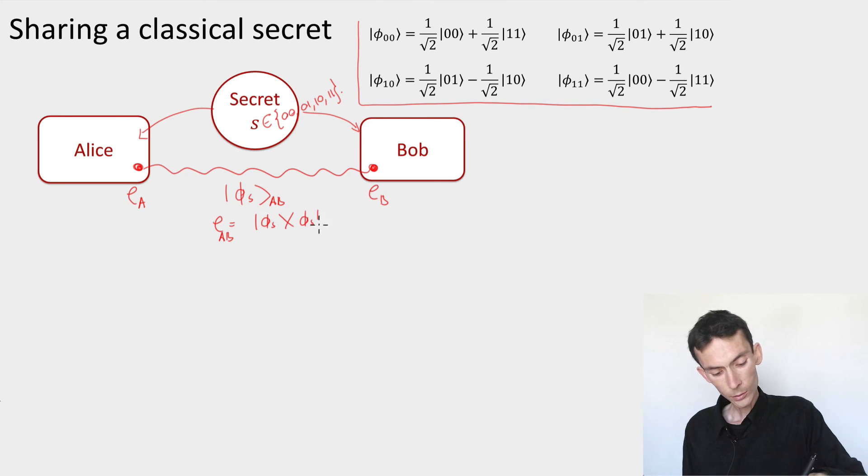So this rho A and this rho B, maybe I should put an s here, rho s, s. So rho A s should not give any information about s, meaning that it should be independent of s. This one, Bob's, should also be independent of s. But it should be the case that the state phi s lets us recover s with probability one.